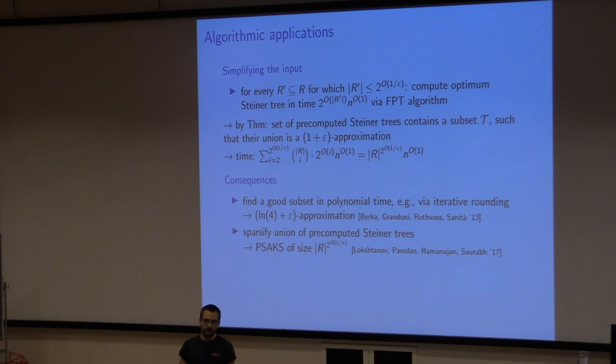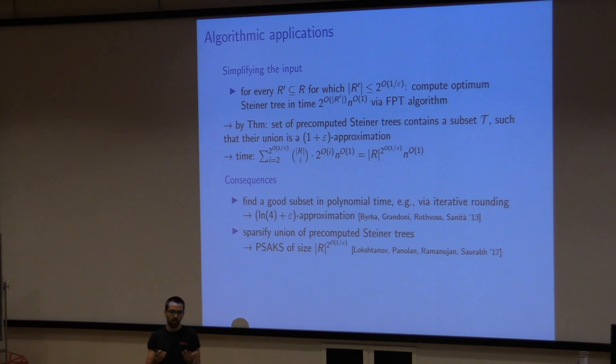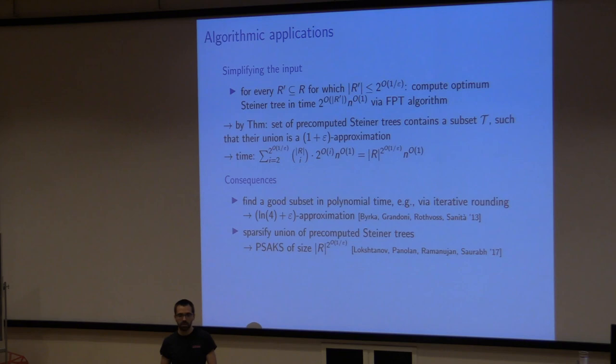For polynomial-time approximation, very clever techniques are used — for the ln 4 approximation, a good subset of these pre-computed Steiner trees is found using iterative rounding. Alternatively, as observed by Lokshtanov et al., you can take the union of pre-computed Steiner trees and sparsify it. The union of all pre-computed solutions is not yet a kernel because there could be many Steiner vertices and edge weights must be encoded as a function of the parameter, but you can sparsify the pre-computed Steiner trees to get a PSAKS.